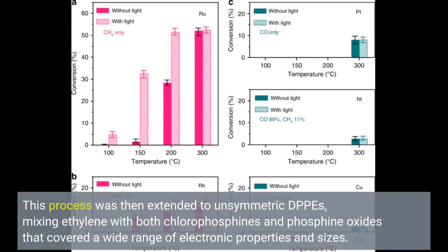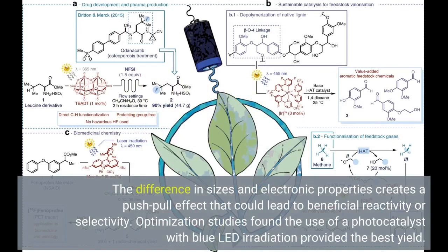This process was then extended to unsymmetric DPPEs, mixing ethylene with both chlorophosphines and phosphine oxides that covered a wide range of electronic properties and sizes. The difference in sizes and electronic properties creates a push-pull effect that could lead to beneficial reactivity or selectivity. Optimization studies found the use of a photocatalyst with blue LED irradiation provided the best yield.